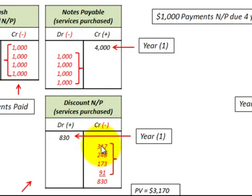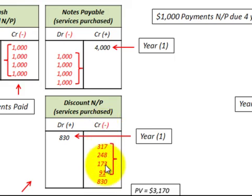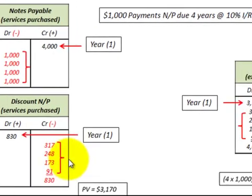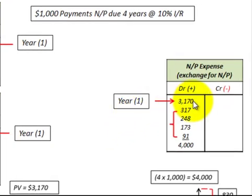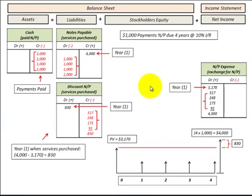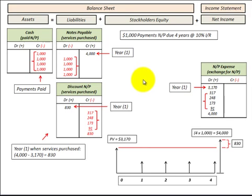Then we reduce the discount to notes payable each year by that interest expense, which reduces the $1,000 payment by the interest expense. This interest expense, which is credited — or reduces discount to notes payable — gets debited into notes payable expense for each year. This is just an overview of how you would record the notes payable and its associated discount and expense for each of the years.